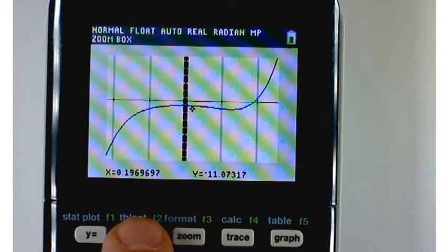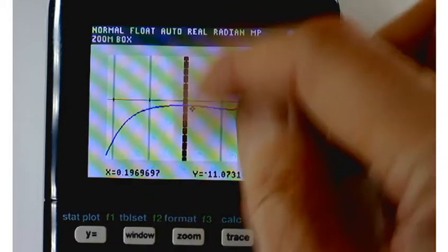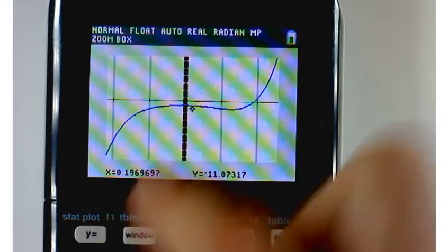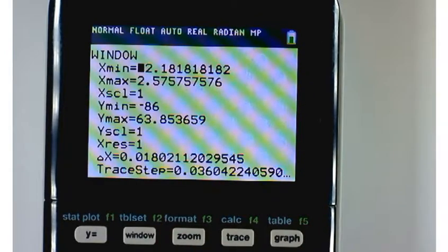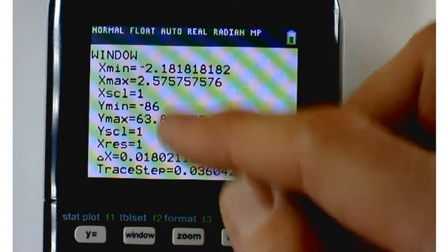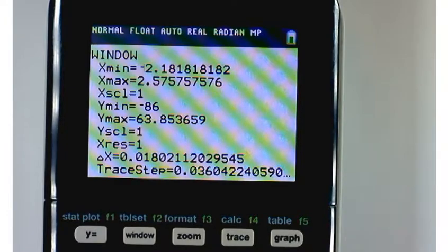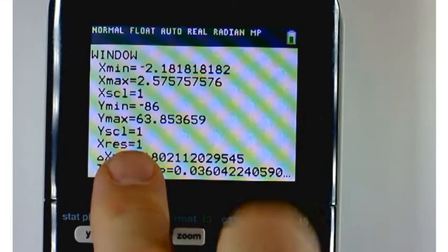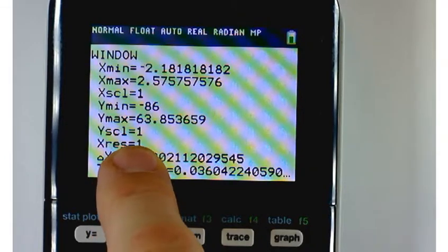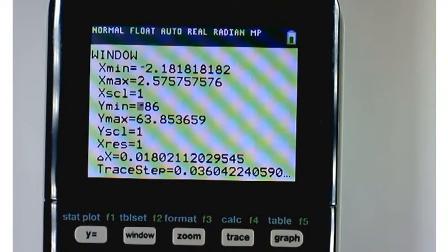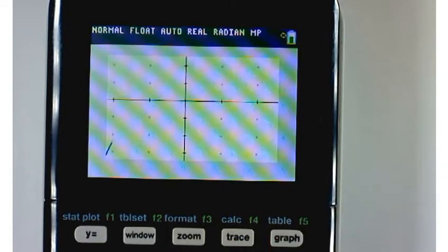Well, what's going on is that your graph is trying to draw a lot of tick marks on the y-axis. If you hit the window key, you see that your graph goes from negative 86 to 63 and change. So it's got, like, almost 150 tick marks that it's trying to squeeze in there, because your y-scale is 1. Let's make it something bigger, like 25. So now your graph won't be so crowded in the y-direction. You get something that looks like this.